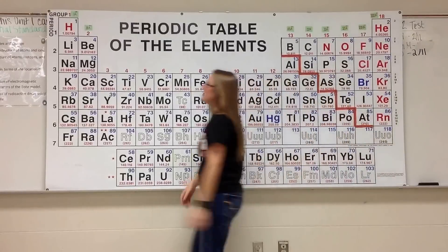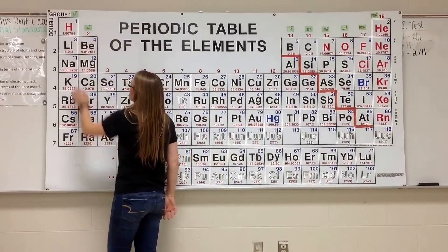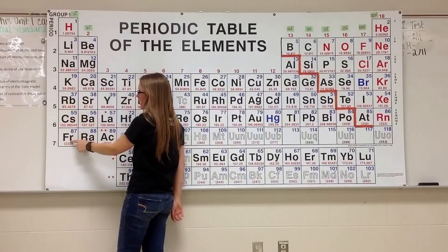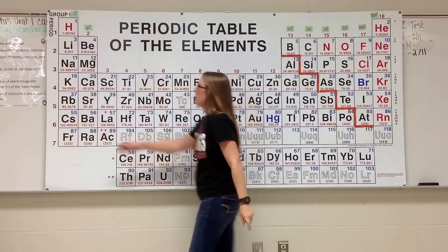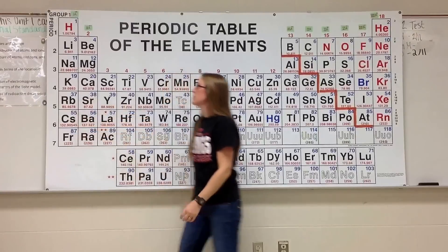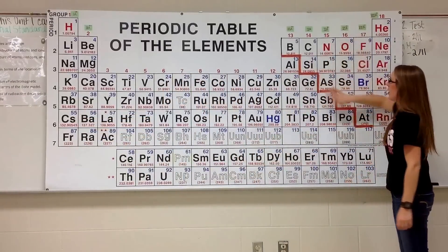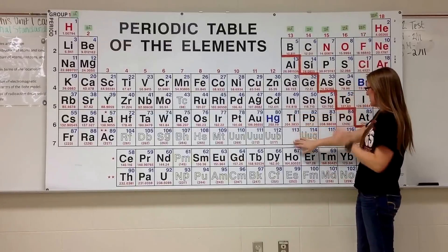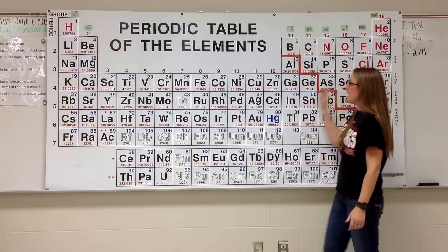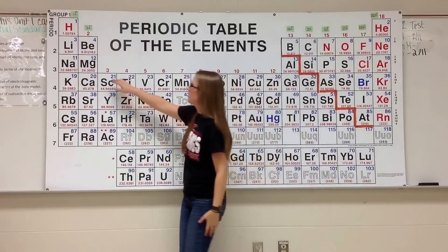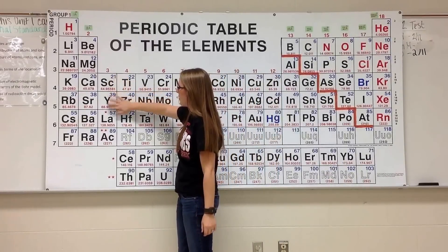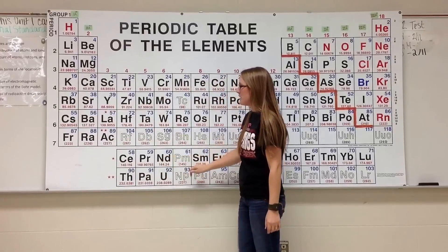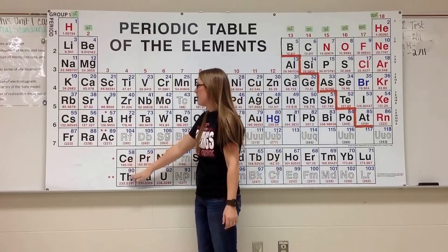Notice that my S block starts by numbers 1, 2, 3, 4, 5, 6, and 7, just like my periodic table — that is my lowest electron energy state. Then is my P block, which is numbers 2, 3, 4, 5, 6, and 7. Then comes my D block, numbered 3, 4, 5, and 6. And then my F block is numbered 4 and 5.